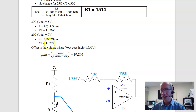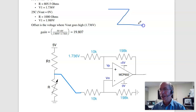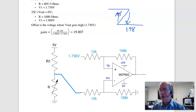At 25 Celsius, the thermistor is 1000 ohms, giving 1.98 volts. Then what I wind up with is this type of characteristic: it turns off at 1.98 volts and turns on at 1.73 volts.